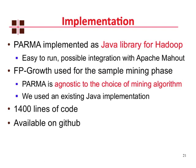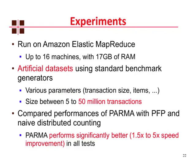We ran our experimental evaluation of PARMA on the Amazon Elastic MapReduce framework, using up to 16 machines with a large amount of RAM. To test the algorithm we created artificial datasets using standard benchmark generators, since such large datasets weren't publicly available. We varied parameters like transaction size and number of itemsets, with dataset sizes ranging between 5 and 50 million transactions. We were very interested in comparing PARMA's performance with PFP — currently the best-performing algorithm for mining association rules and frequent itemsets in MapReduce — and also to the naive distributed counting algorithm. We found that PARMA performs significantly better than both, from 1.5 to 5 times better in speed across all tests.